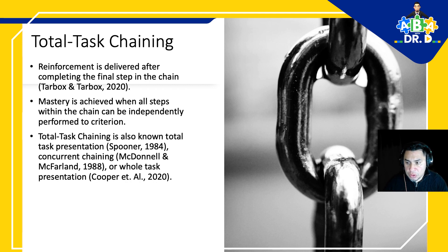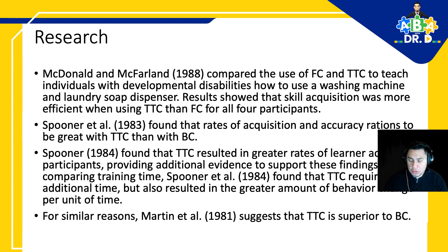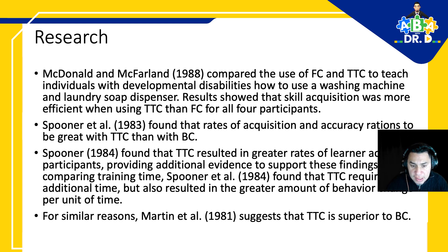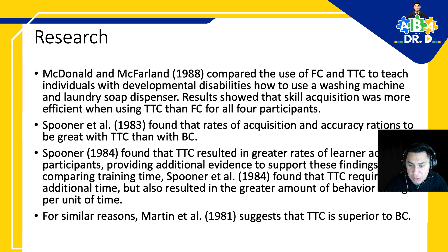Research on total task chaining compared it with forward chaining to see which was more effective. In the McDonald and McFarland 1988 study, they compared forward chaining and total task chaining to teach individuals with developmental disabilities how to use a hand washing machine and laundry soap dispenser. Results showed that skill acquisition was more efficient with total task chaining than forward chaining for all four participants.